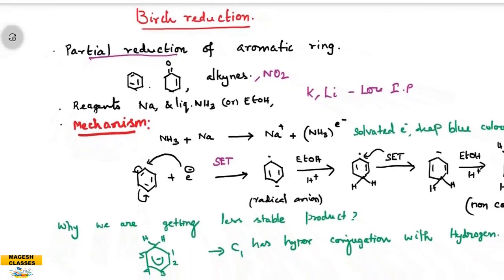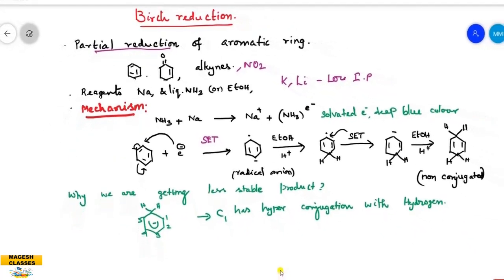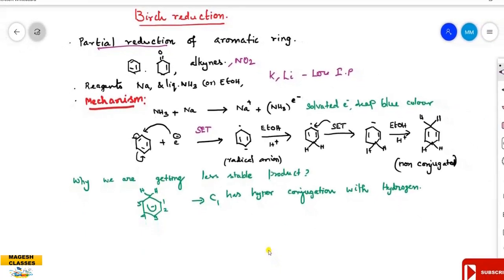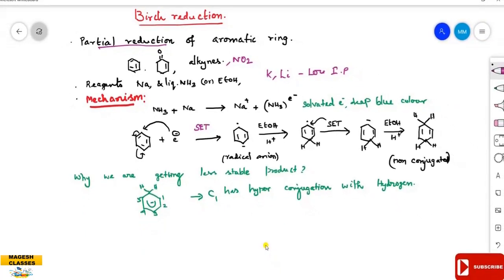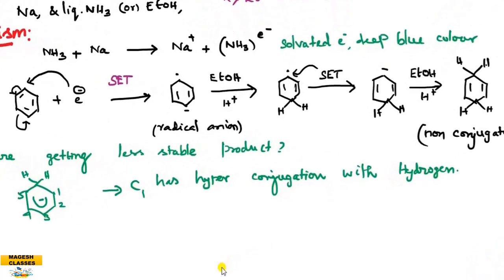Lithium is used because it has a low ionization potential. In the mechanism, sodium in liquid ammonia gives Na⁺ and a solvated electron. Ammonia is the solvent and it forms a deep blue color. In the first step, this electron approaches the benzene nucleus - this is called Single Electron Transfer (SET).